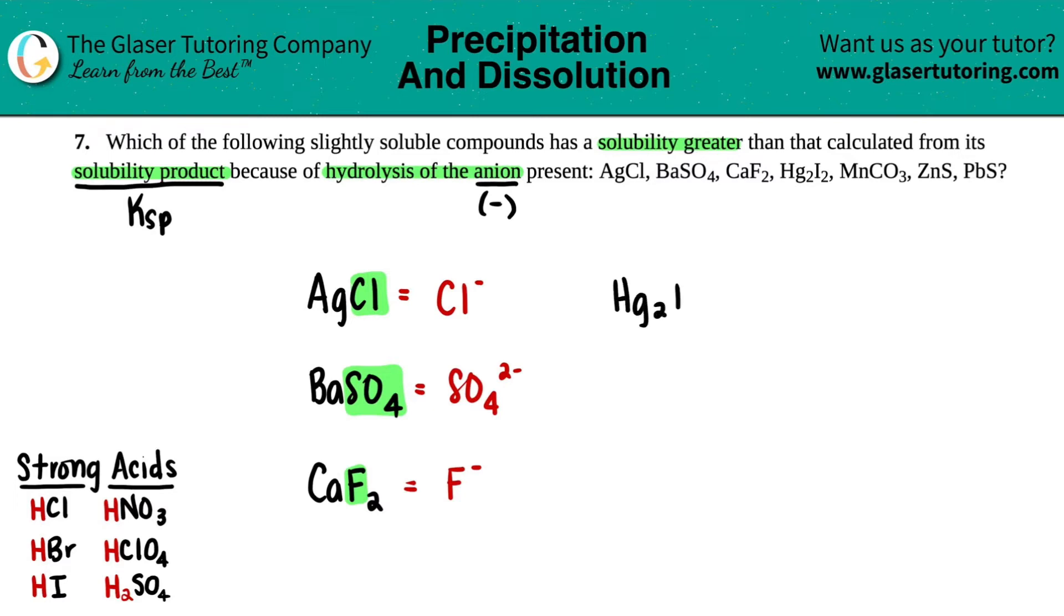I don't care that I have two of them—that's not the purpose of this example. It's a negative one charge; it's a halogen. Let's keep going. We have Hg2I2. The anion here would be the last element, that's the iodine. Once again, I don't care that I have two of them, and it's a negative one.